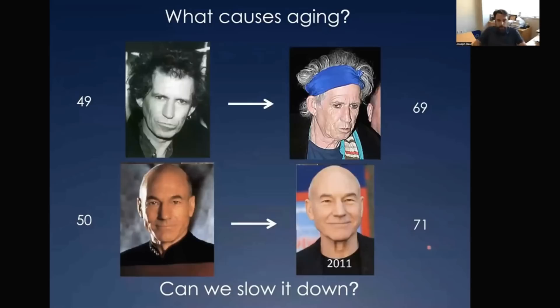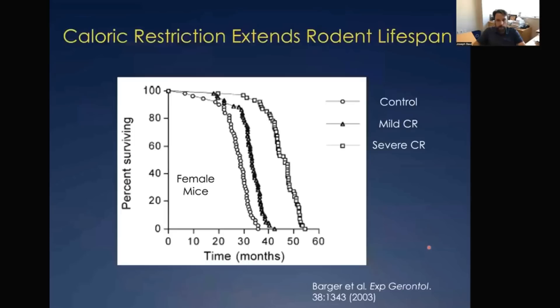This is the general interest of my lab: what causes aging and whether there's anything we can do to slow it down. The goal is to take someone with a less successful aging trajectory and redirect them to a more successful aging trajectory.